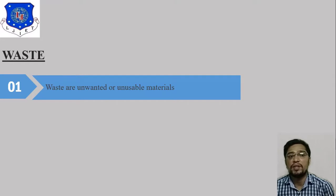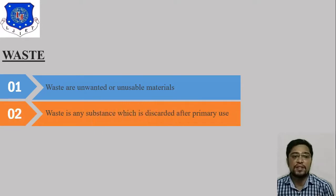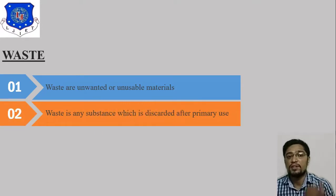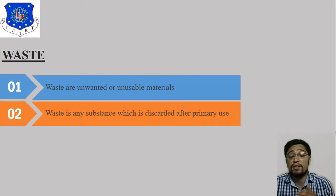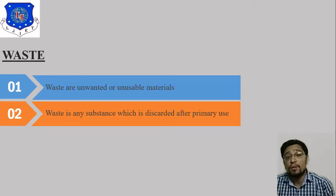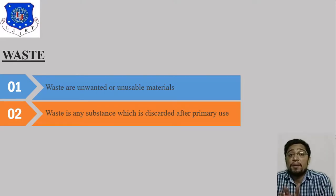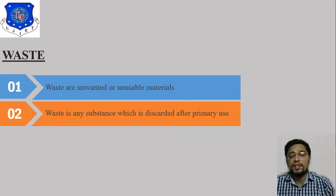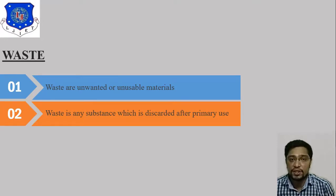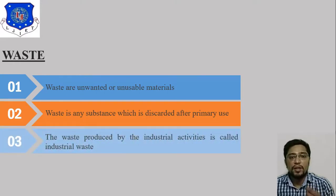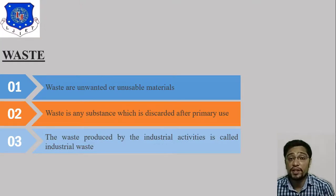The first important point is that waste consists of unwanted or unusable materials. Second, waste is any substance which is discarded after primary use. In industry there will be some scrap, and in chemical industries there will be some chemical formation or chemical mixture — that is also known as waste. Each and every industry has some different scrap or different wastage.